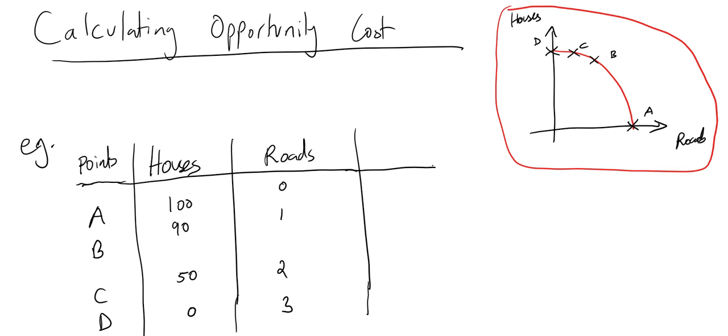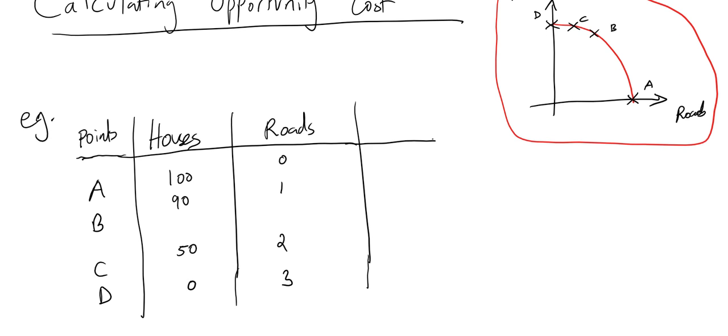producing one of two products: houses or roads. Let's say we've got these four points—point A, point B, point C, and point D—on our production possibility frontier. If we translate these points into numbers, this is the example we have.